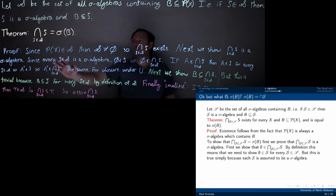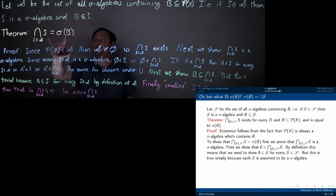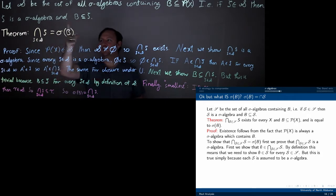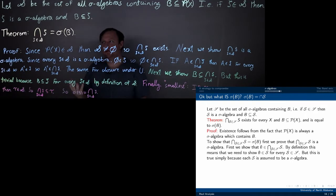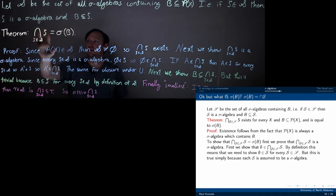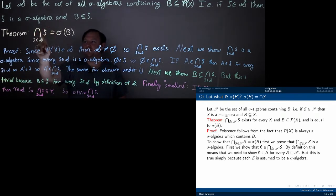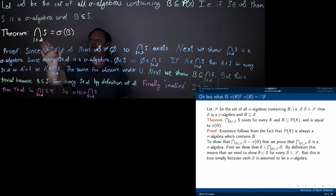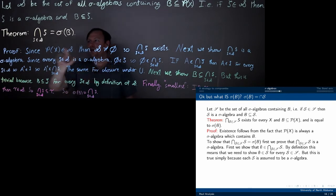We'll now prove this claim, which basically condenses a whole bunch of assertions all at once: that this thing exists, that it is a sigma algebra, that it contains B, and that it is the smallest such sigma algebra.